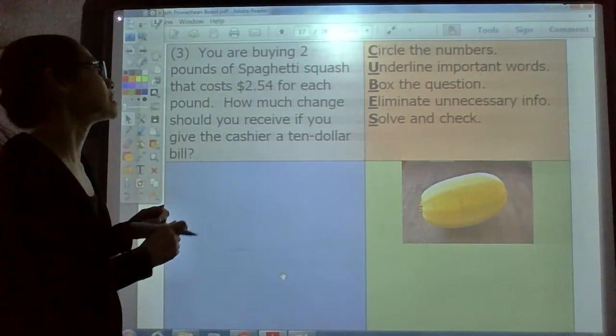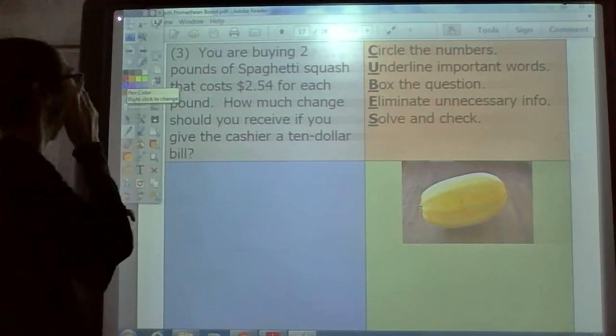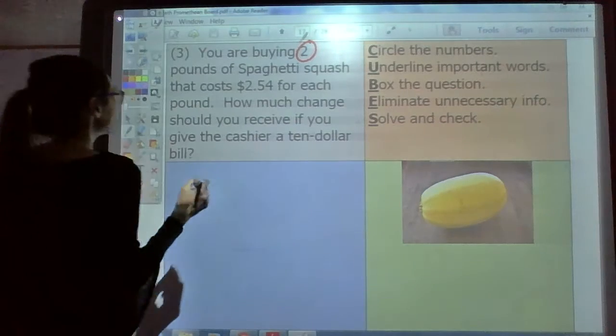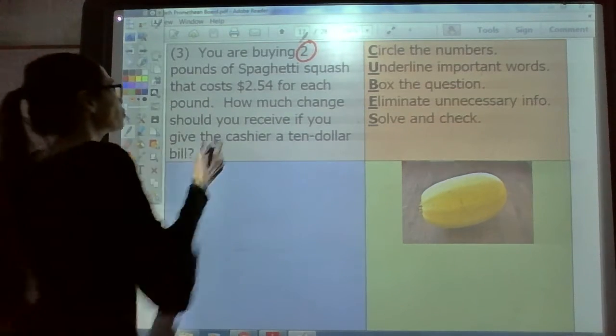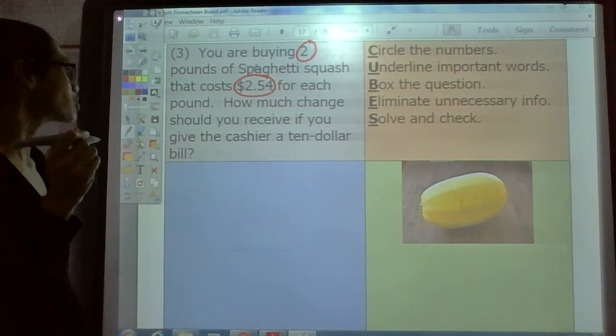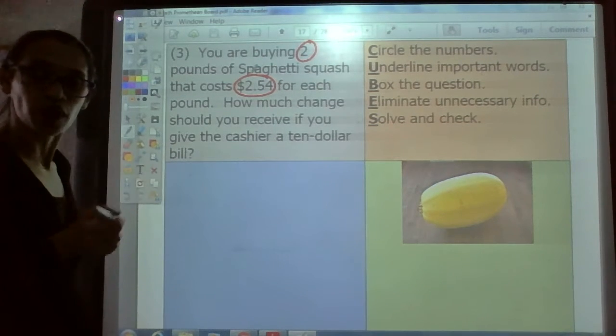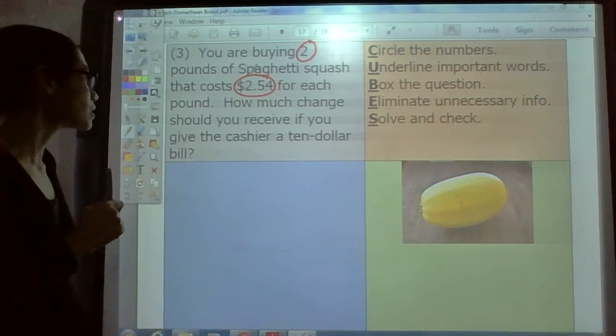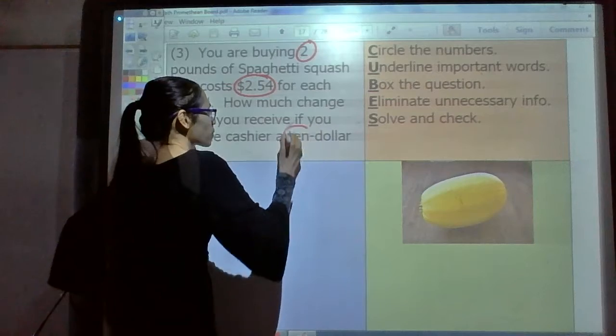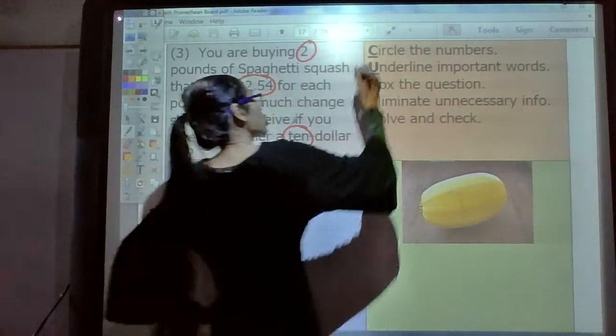First step is that C step. It says to circle the numbers. What numbers do you see? I see the number two. What else do you see? Right there, $2.54. What else do you see? I see one more number. It is in word form, it's a number name. Do you see it? It's right there, $10. Right there. That's all of it. Go ahead and check off that step.